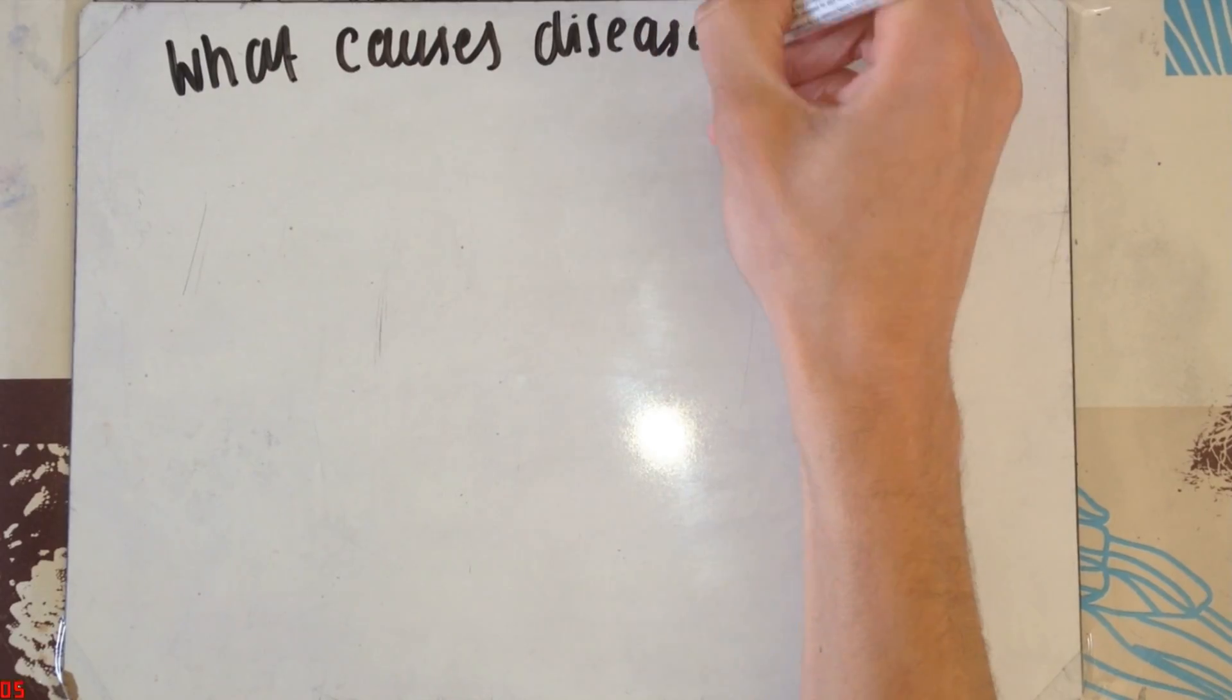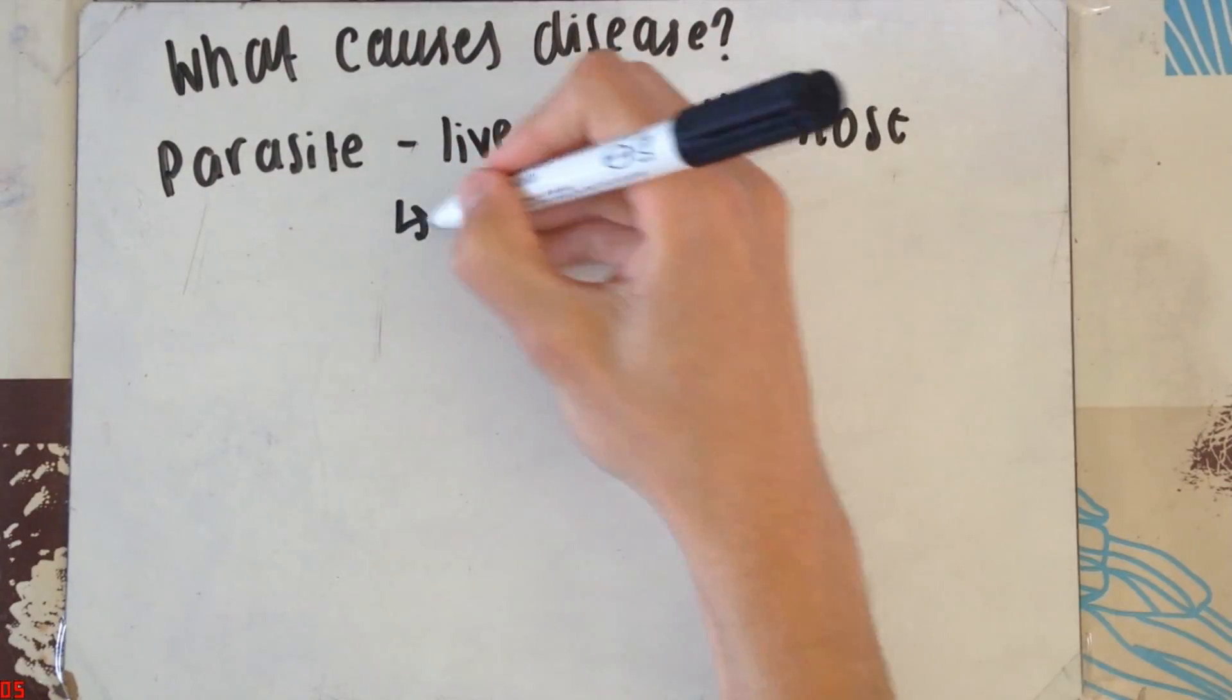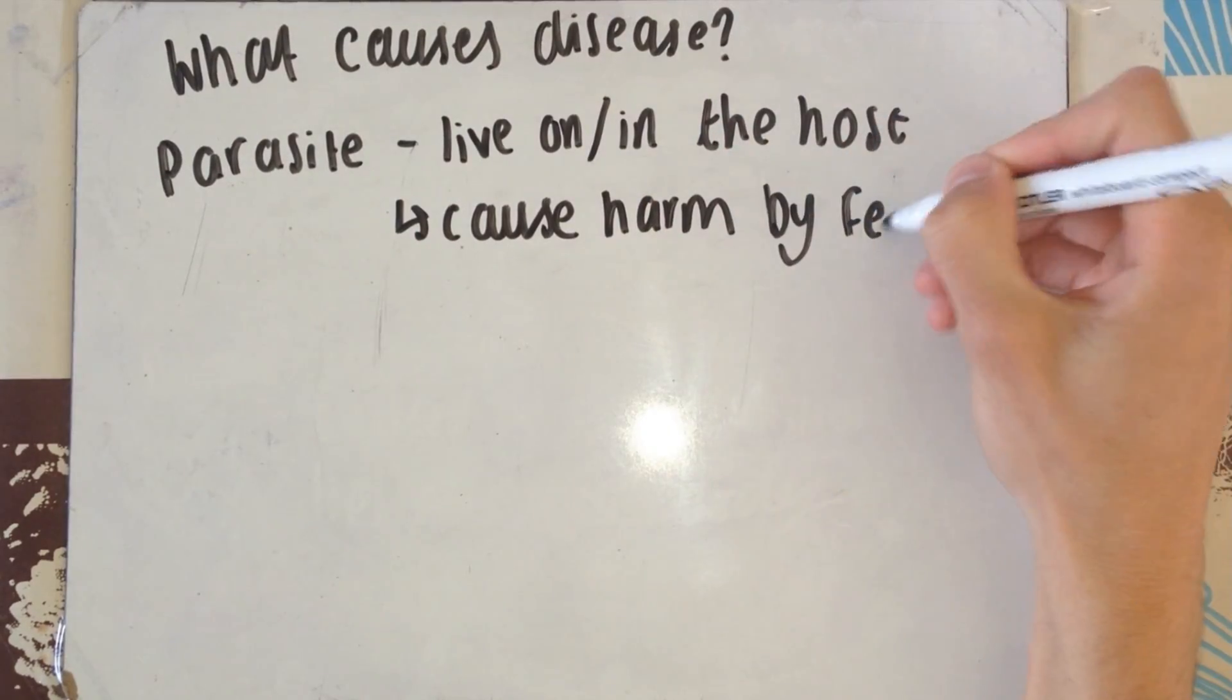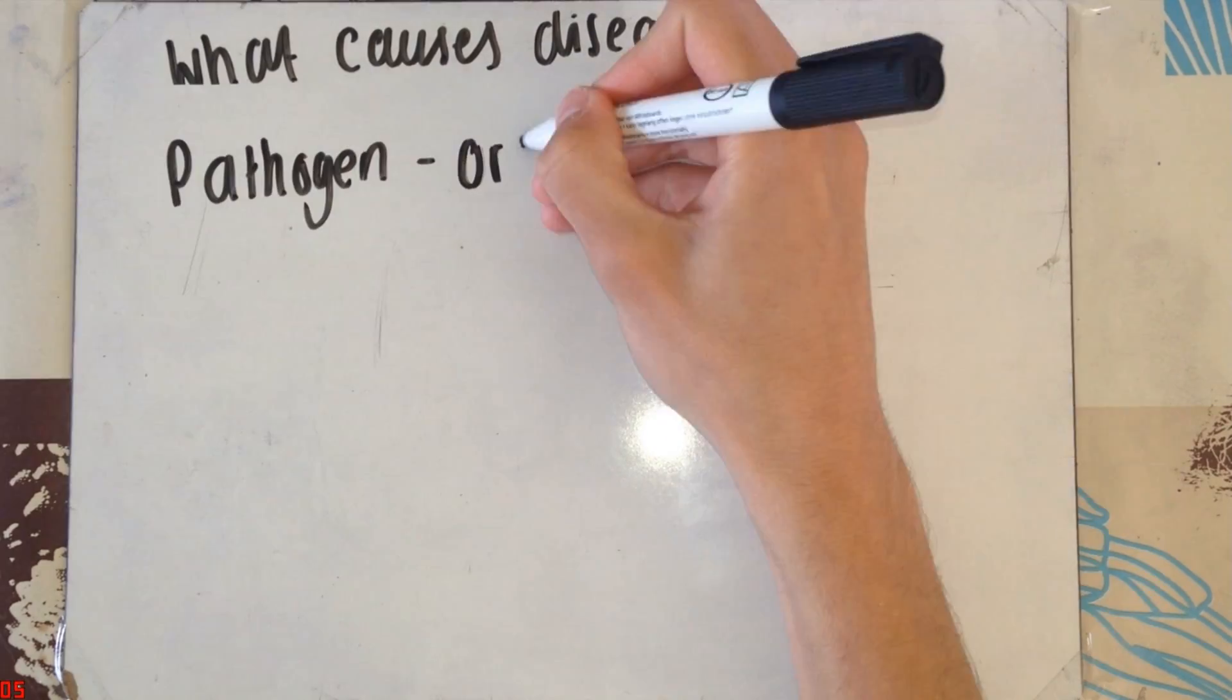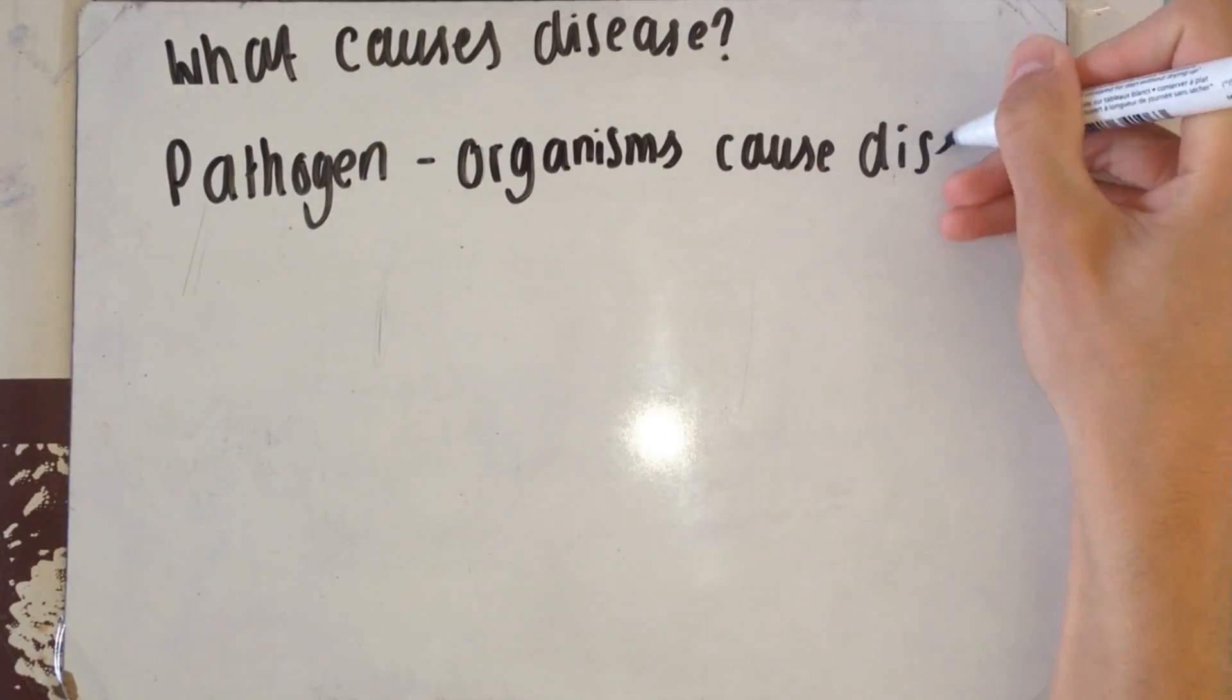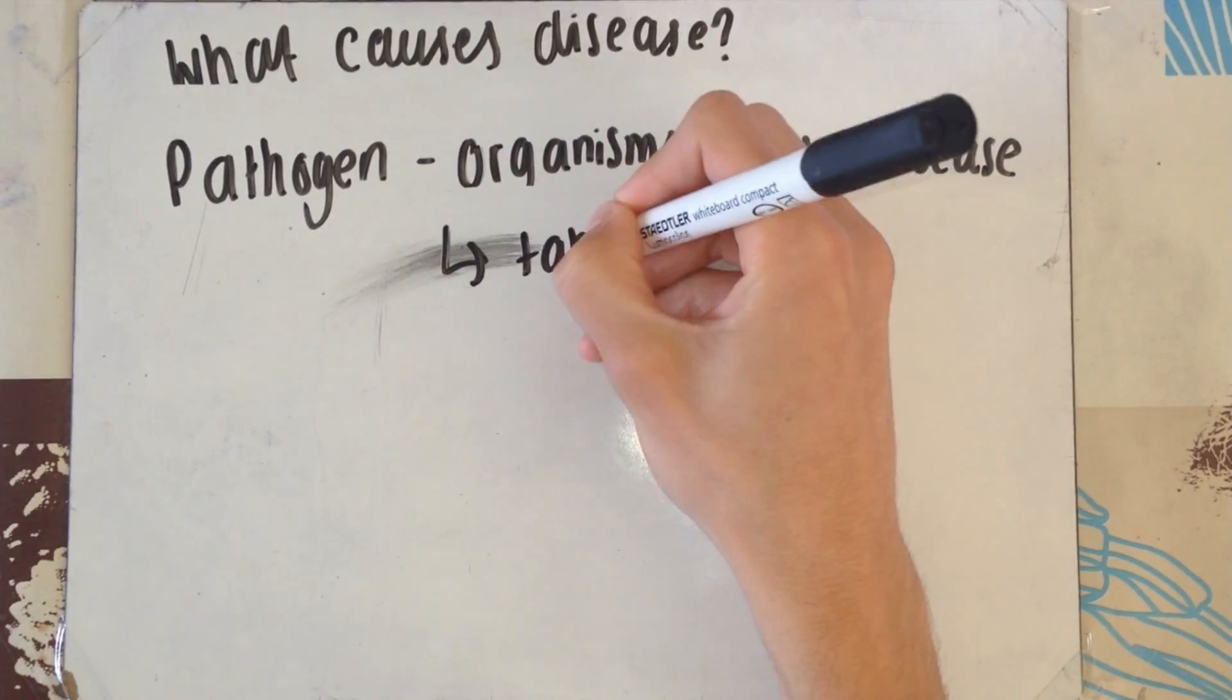So, what causes disease? A disease can be caused by a parasite. A parasite is something that lives either on the host or in the host. Parasites cause harm to their host by feeding on the nutrition. Next, we have a pathogen. Pathogens are purely organisms that cause disease. They do this by also feeding off the nutrition of the host.